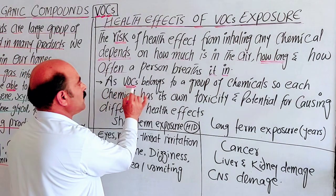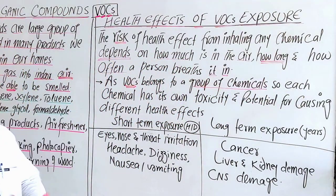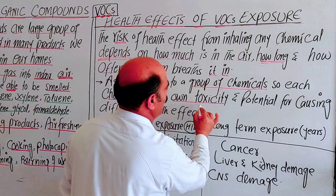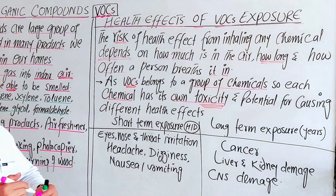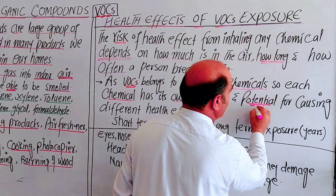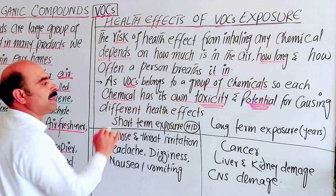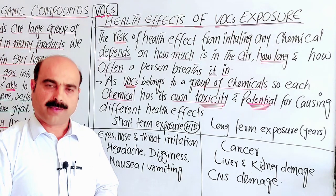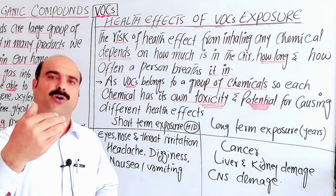VOCs belong to a large group of chemicals, and each chemical in the group has its own toxicity — zahreelah-pun — meaning each chemical has its own bad or harmful effect. Each chemical has its own potential for causing different health effects based on its chemical severity and toxicity.